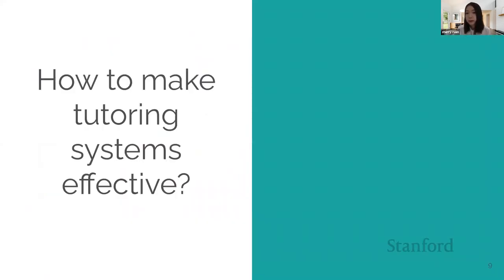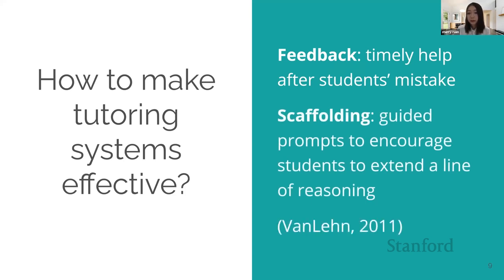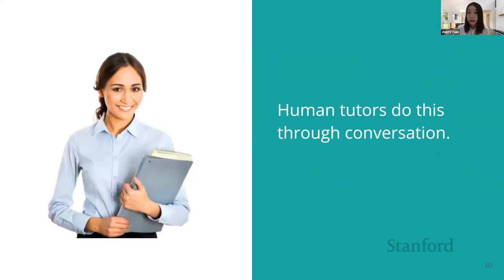How do we design such tutoring systems? We need to understand what are the major factors separating performance of human tutors from computer tutors. Prior researchers found that there are feedback and scaffolding. Feedback refers to timely feedback when students make a mistake or become stuck. Scaffolding is an educational term referring to providing guided prompts to encourage students to move progressively towards stronger understanding of a problem.